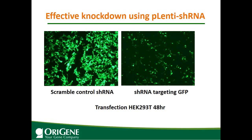This shows the effective knockdown using the lentiviral shRNA. As mentioned, the lentiviral shRNA vector has a GFP reporter between the LTRs, so all transduced cells will be green. The scramble control shRNA is the negative control, and a separate shRNA targeting GFP in the vector shows significant knockdown of GFP.